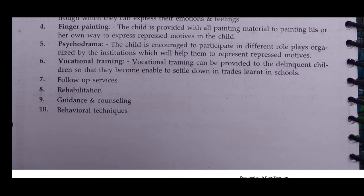Through these interventions, good behavior can be gained. Then follow-up services, rehabilitation, guidance and counseling, and behavioral techniques should be provided to the child. This is how bad behavior, violent behavior, and anxiety can be controlled, and the child can be prevented from engaging in crime.